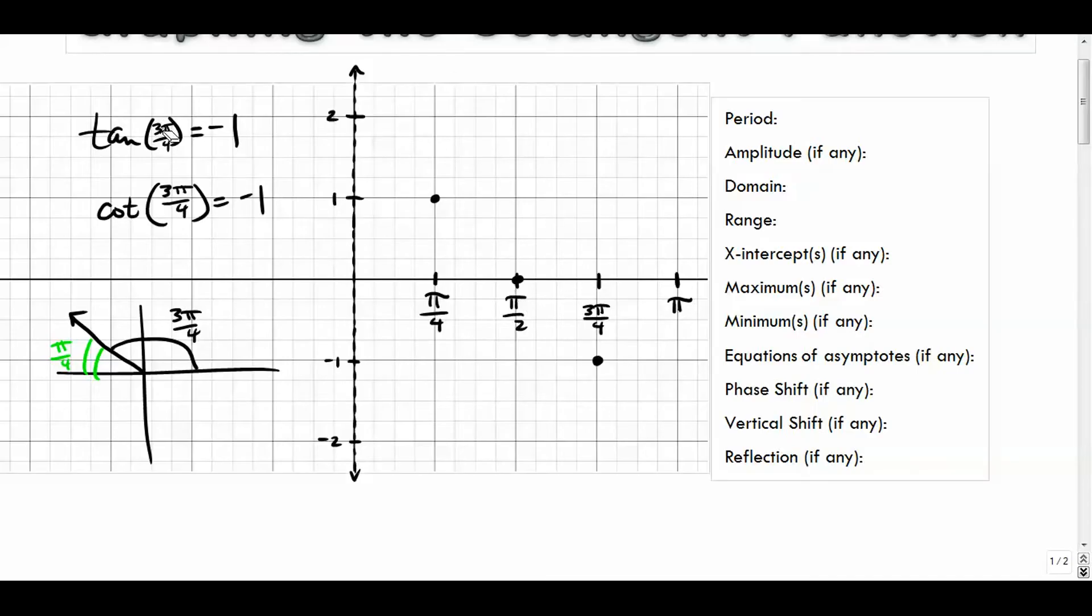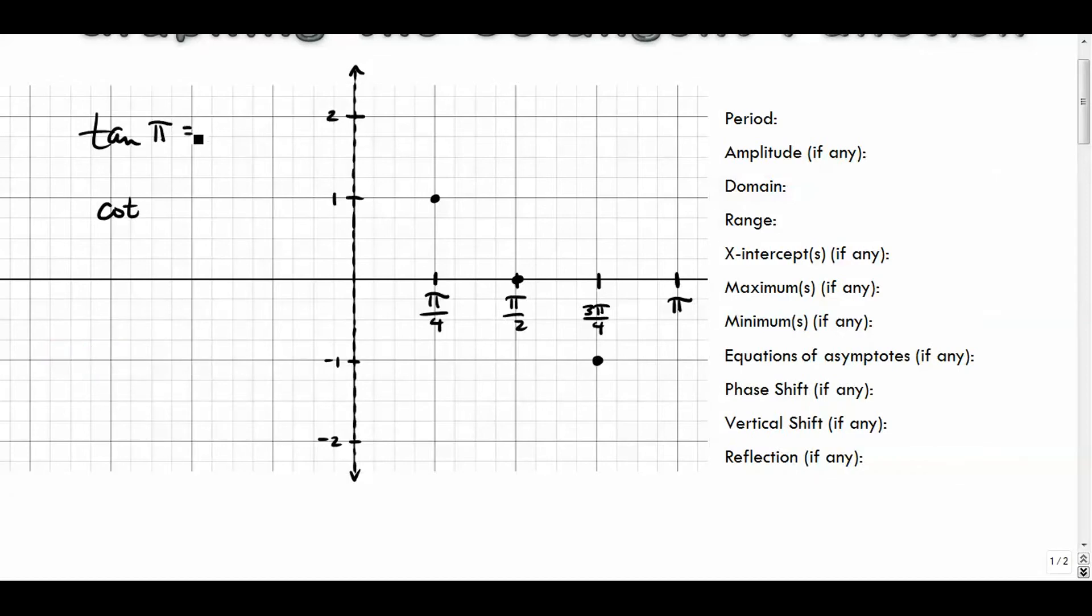Let's go to π next up. So let's think about the tangent of π. Well, on our unit circle, π is over here, negative one comma zero. So the tangent is sine over cosine. The sine is the y value, cosine is the x value. So the tangent of π was zero. But the cotangent of π is cosine over sine.